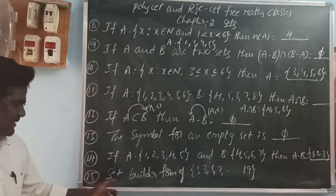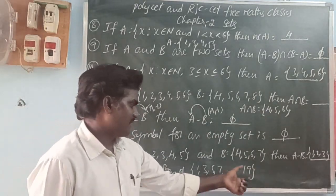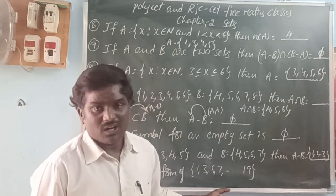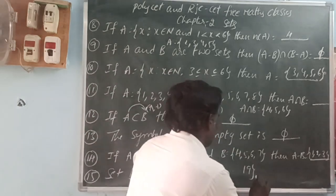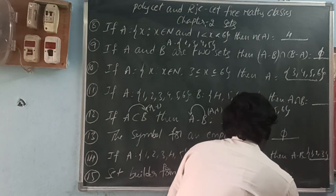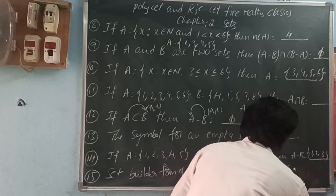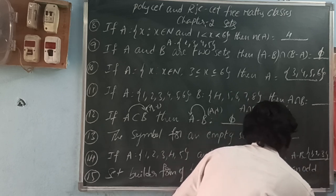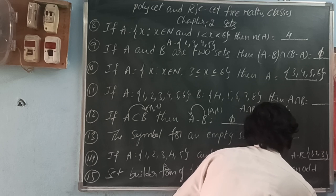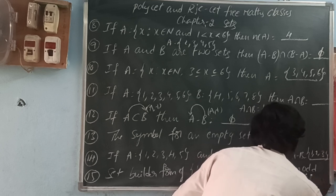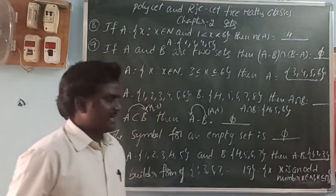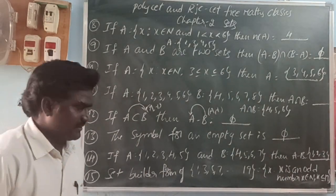Next: the set builder form of {1, 3, 5, 7, 9, ..., 19}. So these are odd numbers. We can write the set builder form as: x such that x is an odd number, x belongs to N, and x is less than or equal to 19.